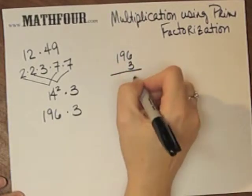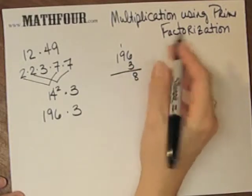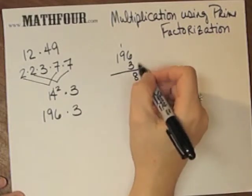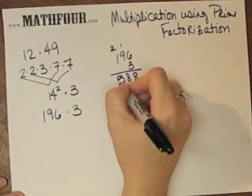196 times 3 is a little easier to do. I don't really even need to write this out. 3 times 9... oh there's another 9. 3 times 9 is 27, 28... giving us 588.